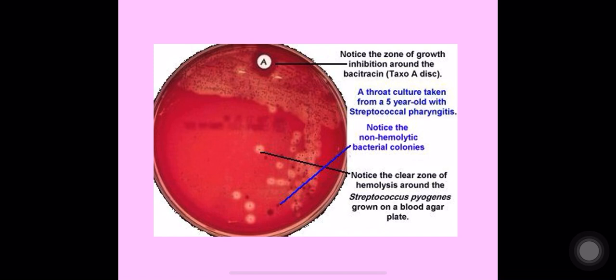Notice the zone of growth inhibition around the bacitracin disc. Streptococcus pyogenes is bacitracin-sensitive, so it will not grow around the bacitracin disc. A throat culture taken from a five-year-old child with streptococcal pharyngitis shows beta hemolytic streptococci and several non-hemolytic colonies, along with bacitracin-sensitive growth, which is Streptococcus pyogenes.